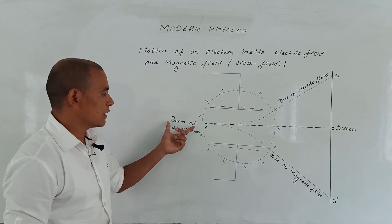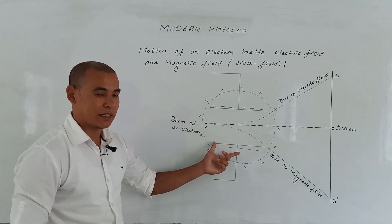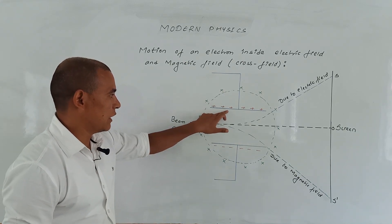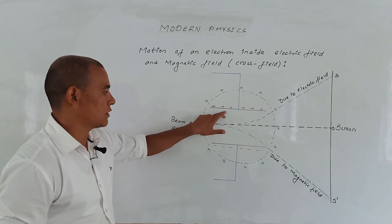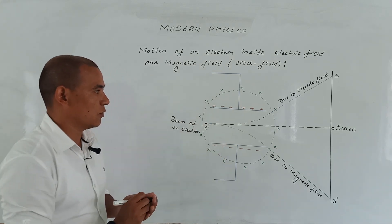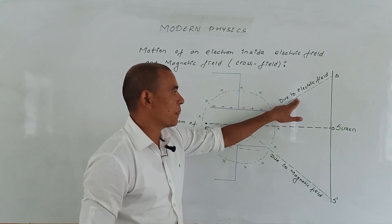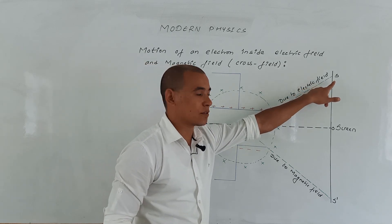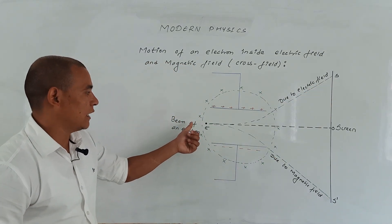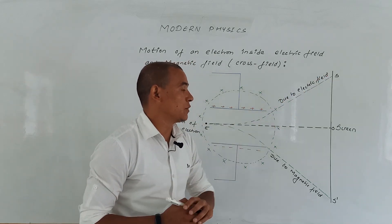We can see the beam of electrons passing through the electric field and magnetic field. First, when only the electric field is applied, the upper plate is positively charged and the lower plate is negatively charged. Since the electron beam is negatively charged, it will be attracted towards the positive plate, eject out, and strike on the screen at position S.